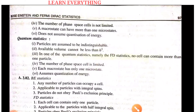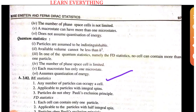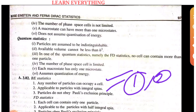Next, we look at Bose-Einstein (BE) statistics. In BE statistics, any number of particles can occupy a cell. It is applicable to particles with integral spin — like spin 1, 2, etc.